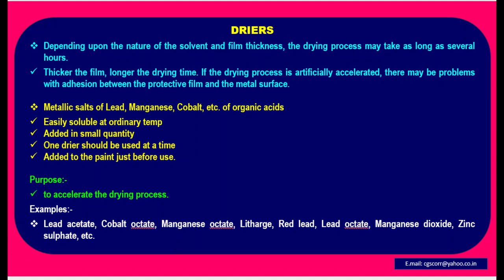Dryers: Depending upon the nature of the solvent and film thickness, the drying process may take as long as several hours. The thicker the film, the longer the drying time. If the drying process is artificially accelerated, there may be problems with adhesion between the protective film and the metal surface. Dryers are metallic salts of lead, manganese, cobalt, etc., of organic acids, easily soluble at ordinary temperature, added in small quantity. One dryer should be used at a time, added to the paint just before use. Purpose: to accelerate the drying process.